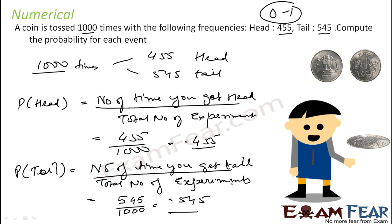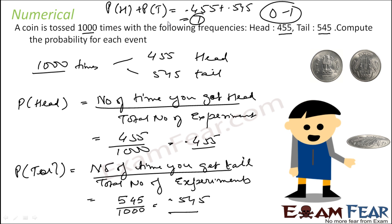Please also note that if we add these two values — probability of head plus probability of tail — what you get is 0.455 plus 0.545, and that is 1. This denotes that we have covered all the sample space. The sample space in this case is head and tail, and we have covered the probability of both, and that is why the addition of these two is 1.